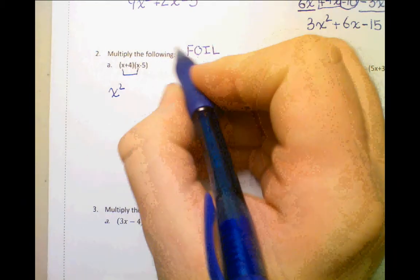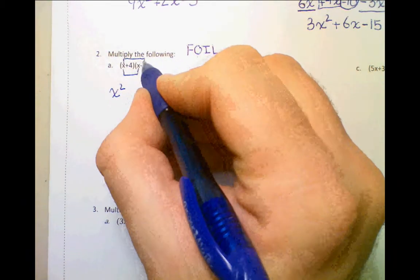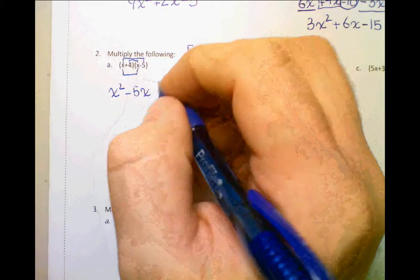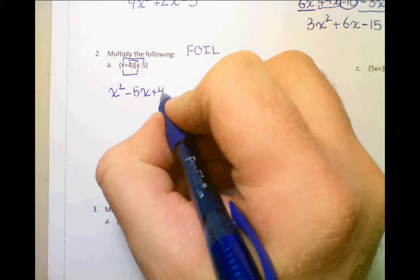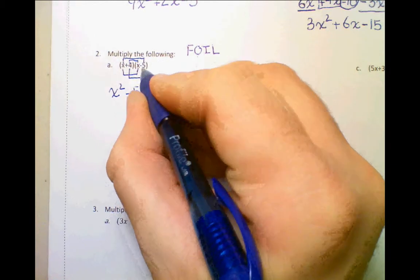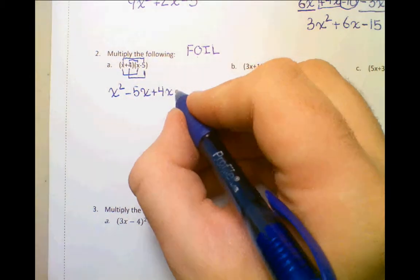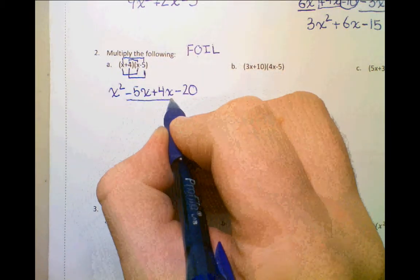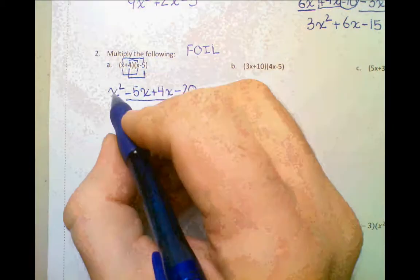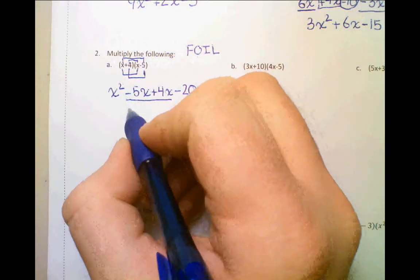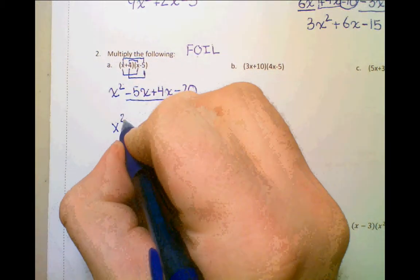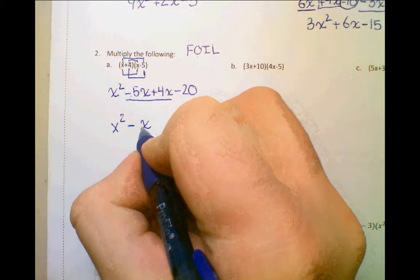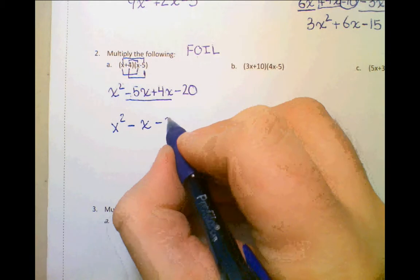The Outside: x times negative 5, which gives us negative 5x. The Inside: 4 times x, which is positive 4x. And the Last: positive 4 times negative 5, which gives us negative 20. You can always combine the two middle terms: negative 5x plus 4x gives us negative 1x, or just negative x. And finally, we have negative 20 at the end.